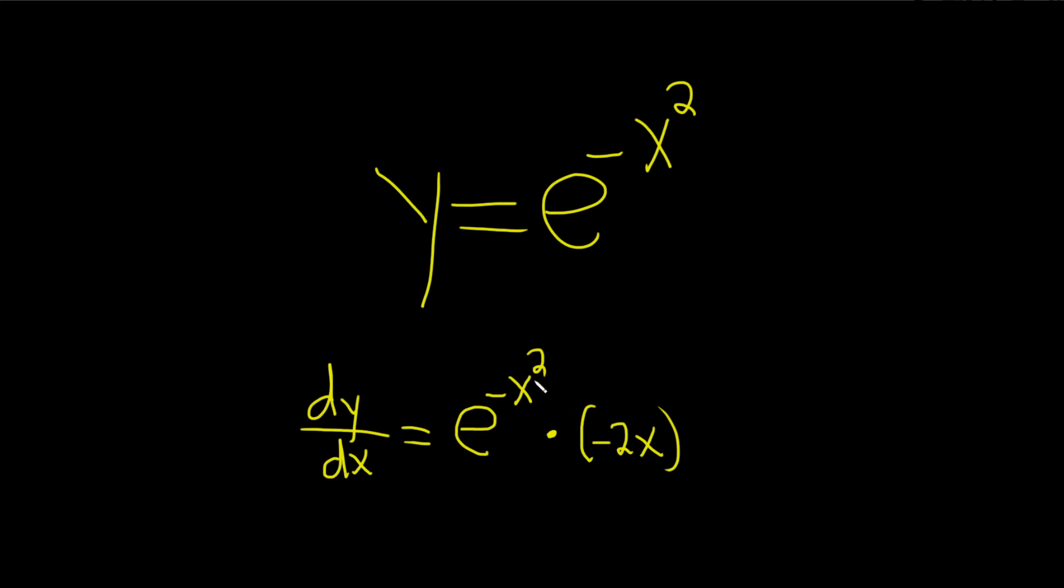So you take the derivative of the outside, you leave the inside untouched, and then you multiply by the derivative of the inside. So this is equal to negative 2x times e to negative x squared. And that would be the derivative of this function.